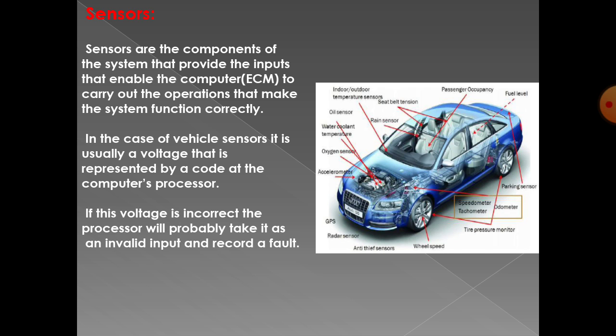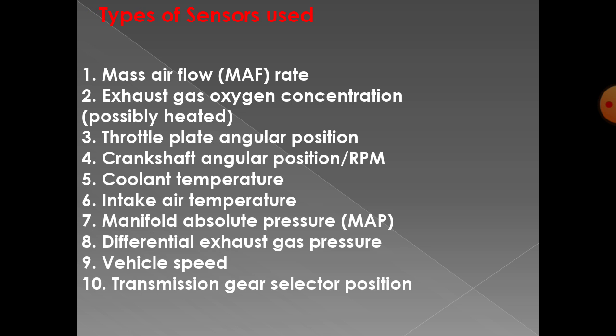There is one central processor — the ECU — to which all sensors are connected. The types of sensors used include: mass air flow rate (MAF), exhaust gas oxygen concentration, throttle plate angular position sensor, crankshaft angular position sensor, coolant temperature, intake air temperature, manifold absolute pressure sensor, differential exhaust gas pressure, vehicle speed, and transmission gear selector position sensor. Many more sensors are used in the automobile.